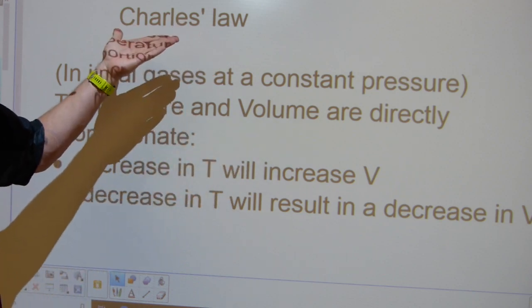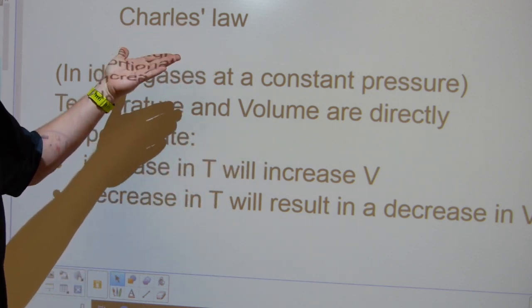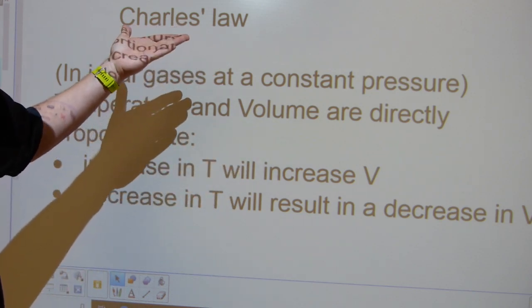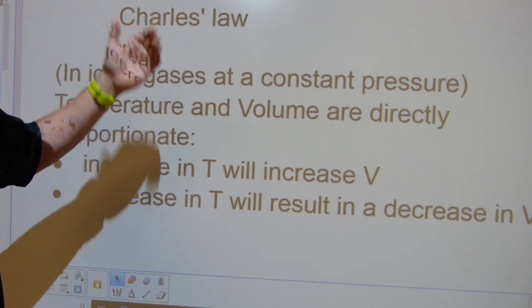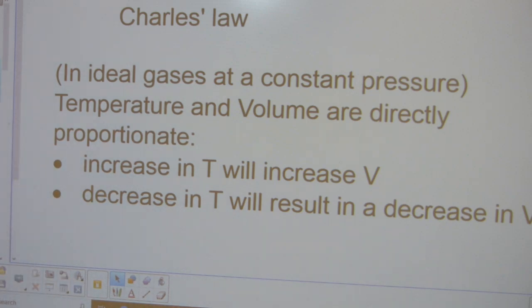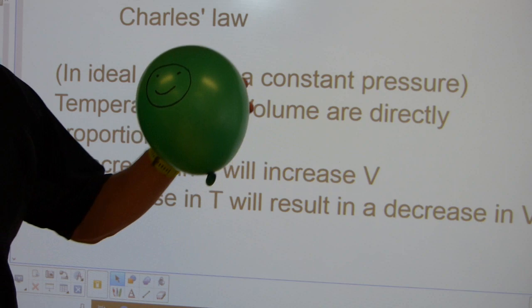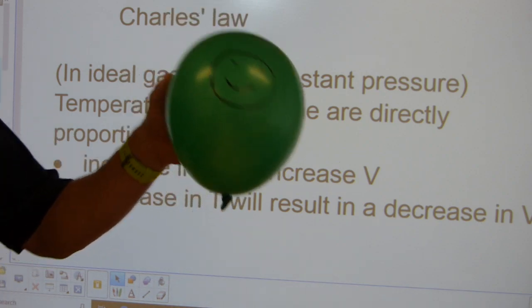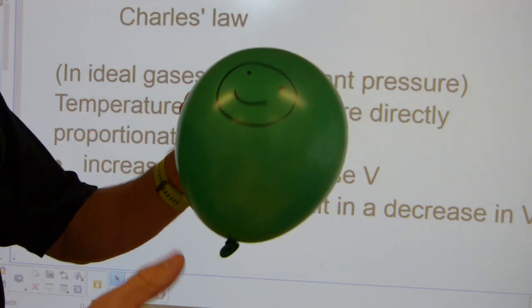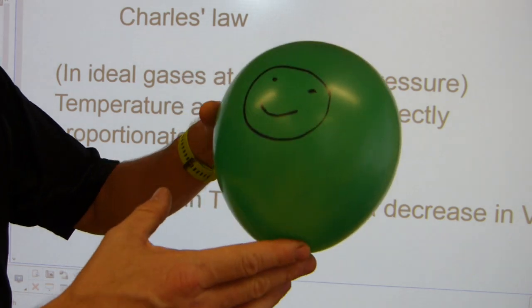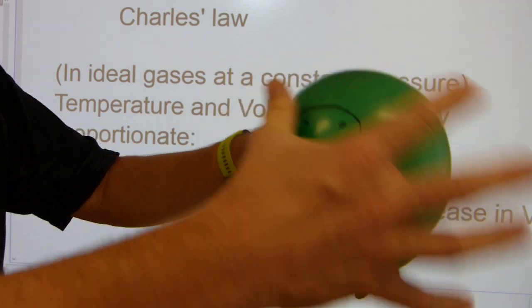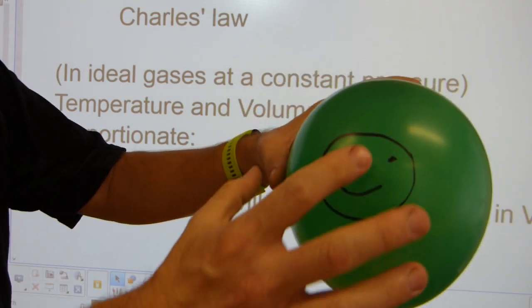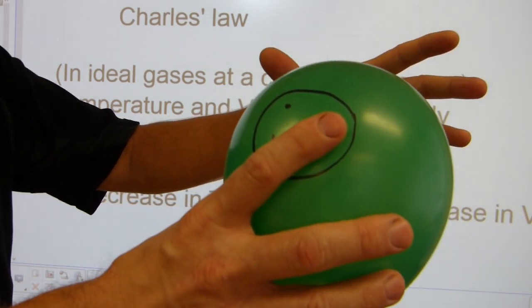So the first law, let's get started, is Charles' law. In English this is pronounced Charles. It looks like Charles, but this is a Frenchman, Jacques Charles. Charles' law comes to us from the world of hot air ballooning. They were experimenting with balloons and observed the following: In a balloon with an open flame, when the gas inside is being heated up, the balloon expands sideways.